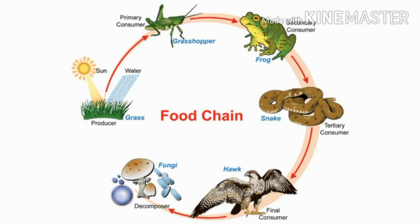The energy stored in food manufactured by green plants is then utilized by herbivores, which constitute the second trophic level, called primary consumers. They are in turn eaten by tertiary consumers. Some organisms are omnivores, eating both producers and carnivores, and such organisms may occupy more than one trophic level in the food chain.